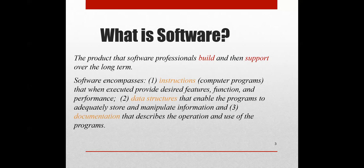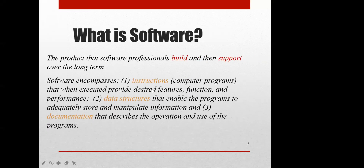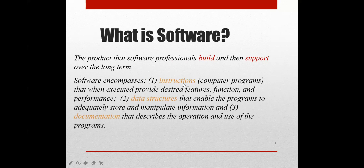Now, how are we going to execute all these things? We have features, functions, and performance — three things you can see on the slide. Through these, the program is executed. So how is the software related to computer programs? I give instructions to the system to execute a program, and to write that program I use Turbo C or any kind of software — that is your software. The software provides many features, functions, and performance.